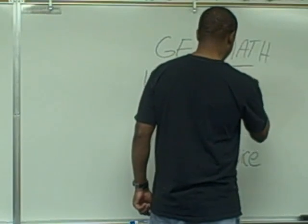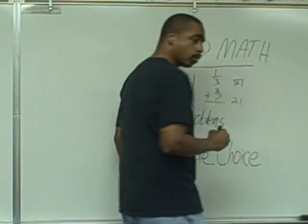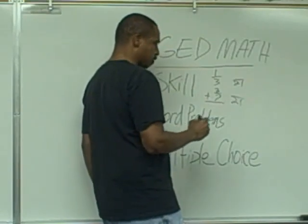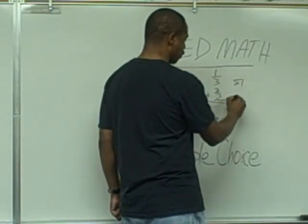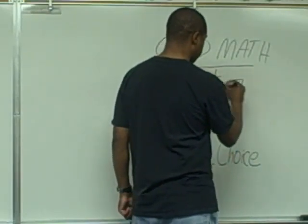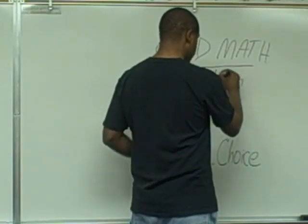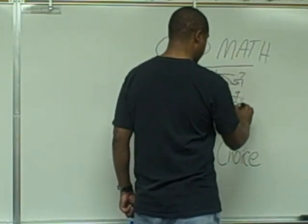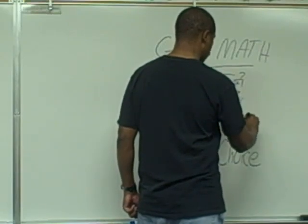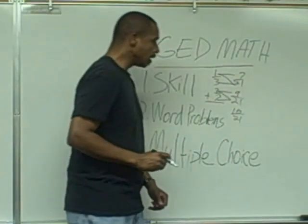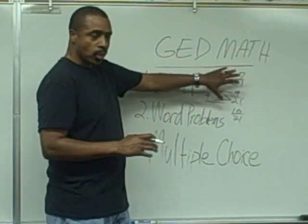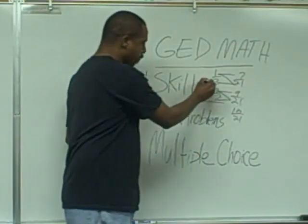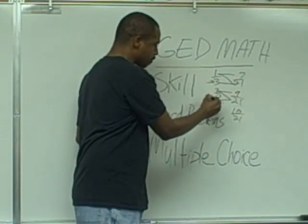Let's do this fraction quickly. The lowest common denominator is 21. 7 goes into 21 three times; 3 times 3 is 9. 3 goes into 21 seven times; 7 times 1 is 7. 7 plus 9 is 16, so the answer is 16/21. That's the skill: knowing how to add fractions with different denominators.